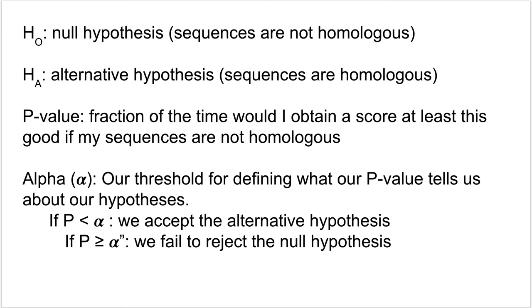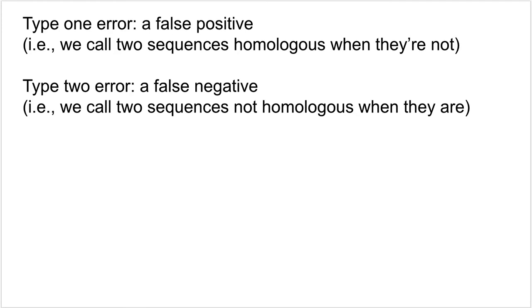A couple more terms to introduce: type 1 error and type 2 error. A type 1 error is a false positive — in our example, that would mean saying two sequences are homologous when they're not. A type 2 error is a false negative — saying two sequences are not homologous when they actually are.